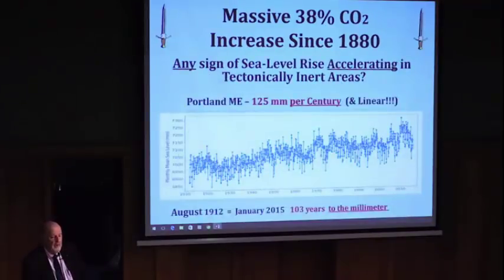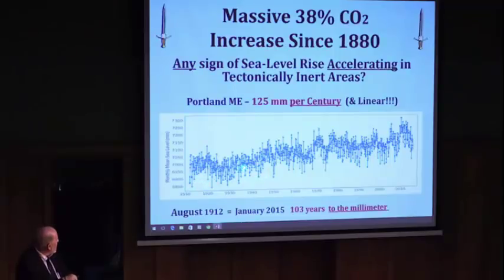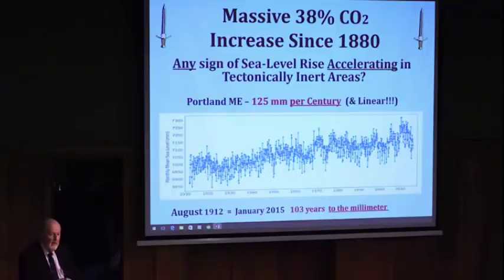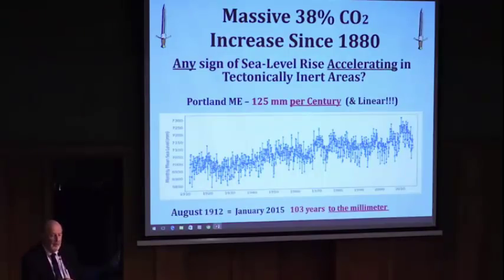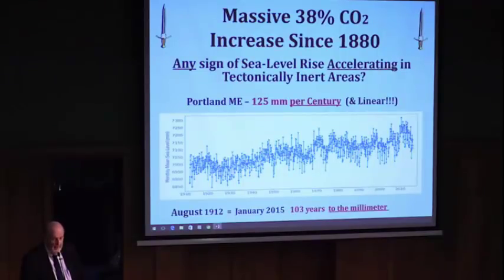This is Portland, Maine. Portland, Maine is on the Gulf of Maine and is tectonically inert. You see wide spreads here because the tide range in Portland, Maine is over three meters every day. However, this is still a linear rise — 125 millimeters per century. The last 25 years in Portland, Maine, sea level has risen exactly five millimeters. You can figure out that is two centimeters per hundred years for the last 25 years.